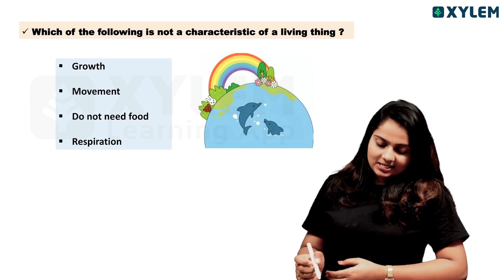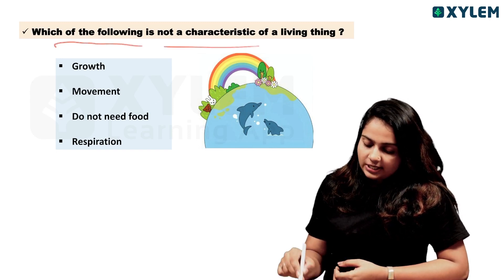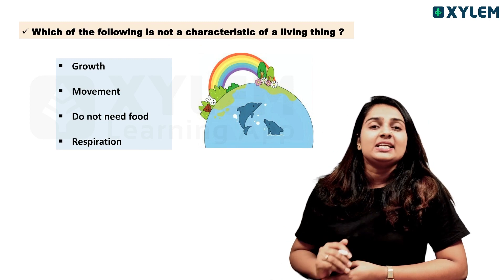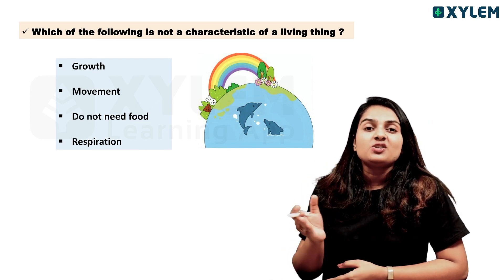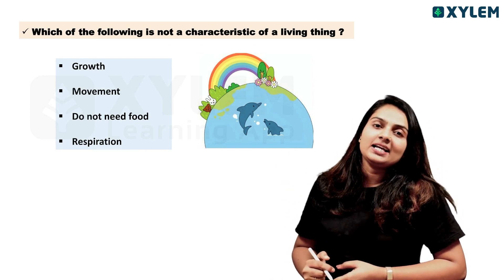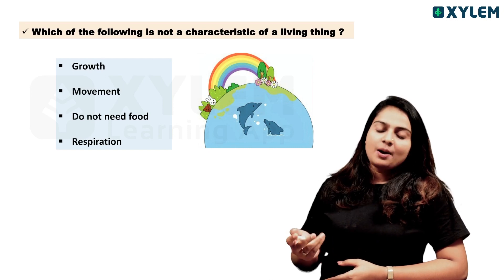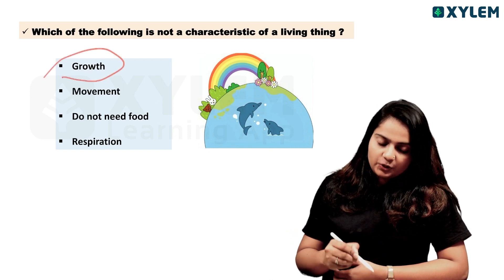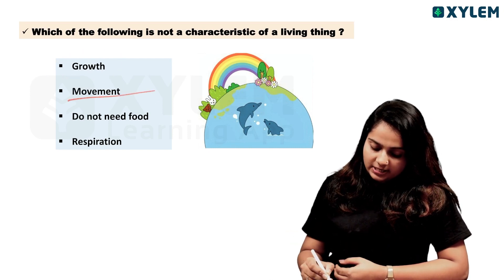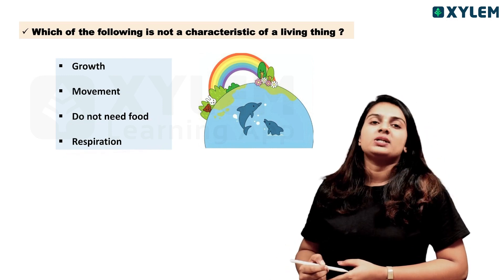First question: Which one of the following is NOT a characteristic of a living thing? The options are: growth, movement, do not need food, and respiration.